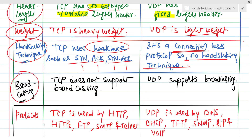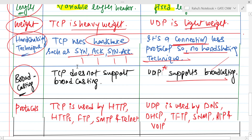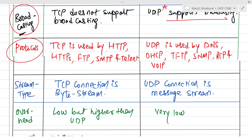The next factor is broadcasting. TCP does not support broadcasting but UDP supports broadcasting — this is a very important point. Now, important protocols under TCP are: Hypertext Transfer Protocol (HTTP), secure File Transfer Protocol (SFTP), Simple Mail Transfer Protocol (SMTP), and Telnet. UDP is used by Domain Name Services (DNS), Dynamic Host Configuration Protocol (DHCP), TFTP, SNMP, IP, and Voice over Internet Protocol (VoIP).